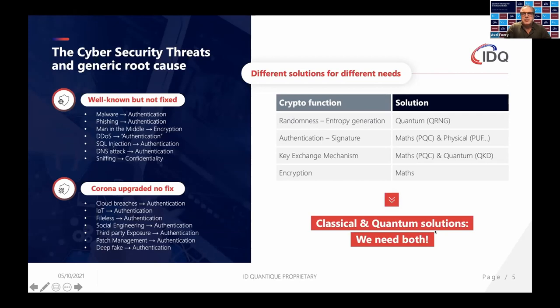If you look at different functions on the crypto side, the one with least visibility is randomness — everybody sees this as a given, but unfortunately it is not, especially when we think about future threats. Randomness is a key topic and we need a better solution, which we believe we have with the QRNG chip. We already distribute a lot of products in different type of setups.